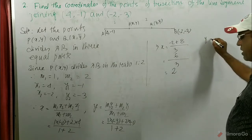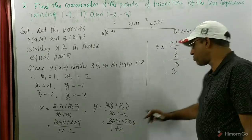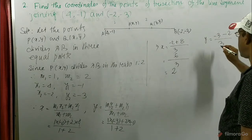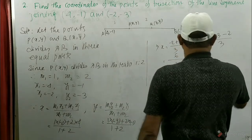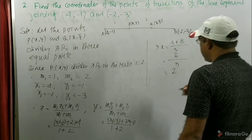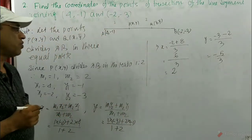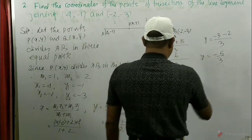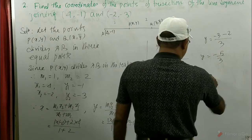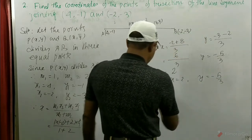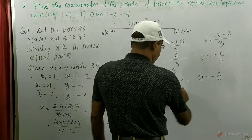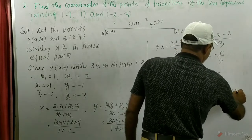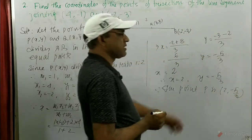So x = 2 and y = -5/3. Therefore, the point P is (2, -5/3). This is the point P. Next, we want to find Q. Now we got the point P as (2, -5/3). If we consider Q, then Q divides this line segment in the ratio 2 is to 1. Q divides in the ratio 2 is to 1.